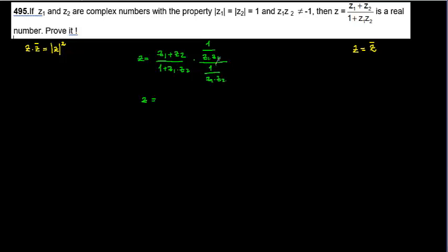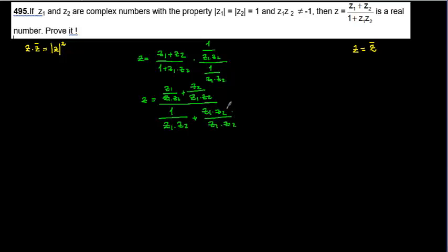After multiplying numerator and denominator, I get: z1 over z1·z2 plus z2 over z1·z2, all over z1·z2 over z1·z2 plus 1. Simplifying: z1 cancels with z1, z2 cancels with z2, giving 1 over z2 plus 1 over z1, all over 1 plus 1, which reduces nicely.